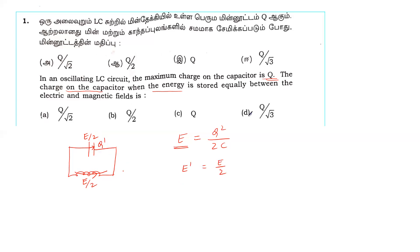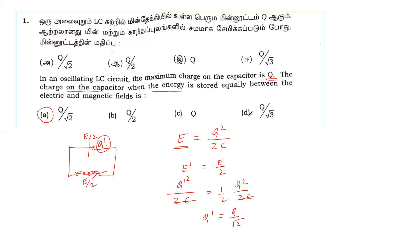The energy stored in the capacitor is q²/2C. When energy is split equally, each field gets E/2. Setting q²/2C equal to half the total energy and solving, we get the charge q equal to Q divided by root 2.